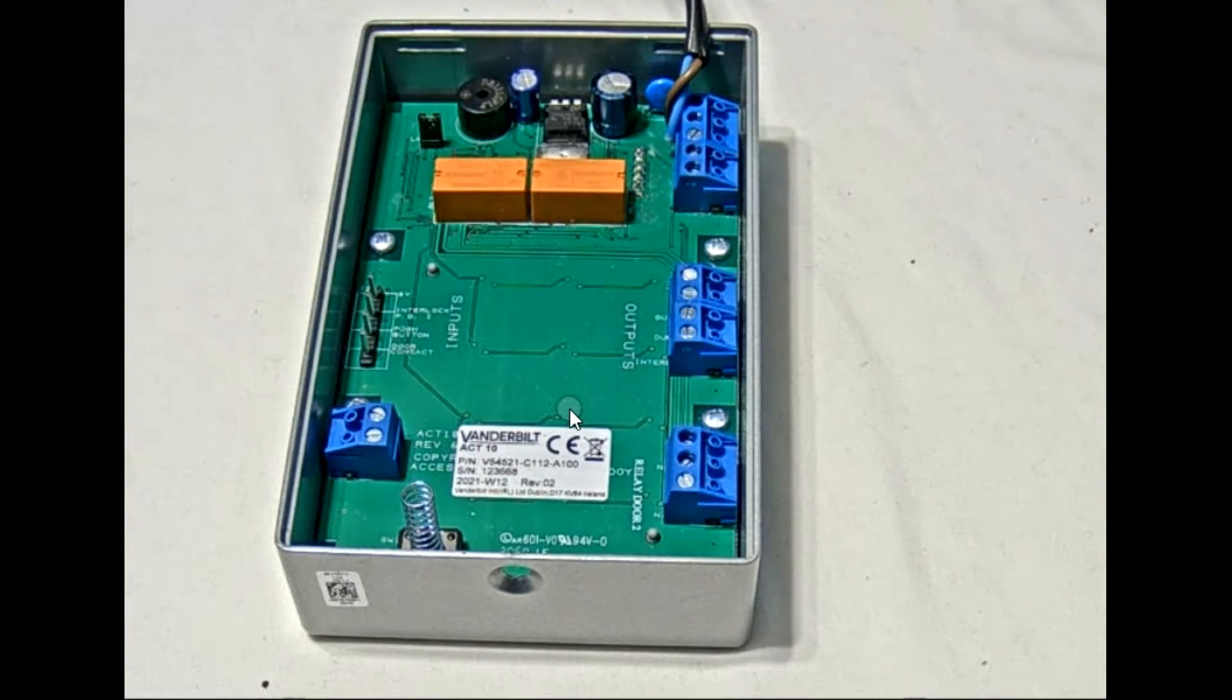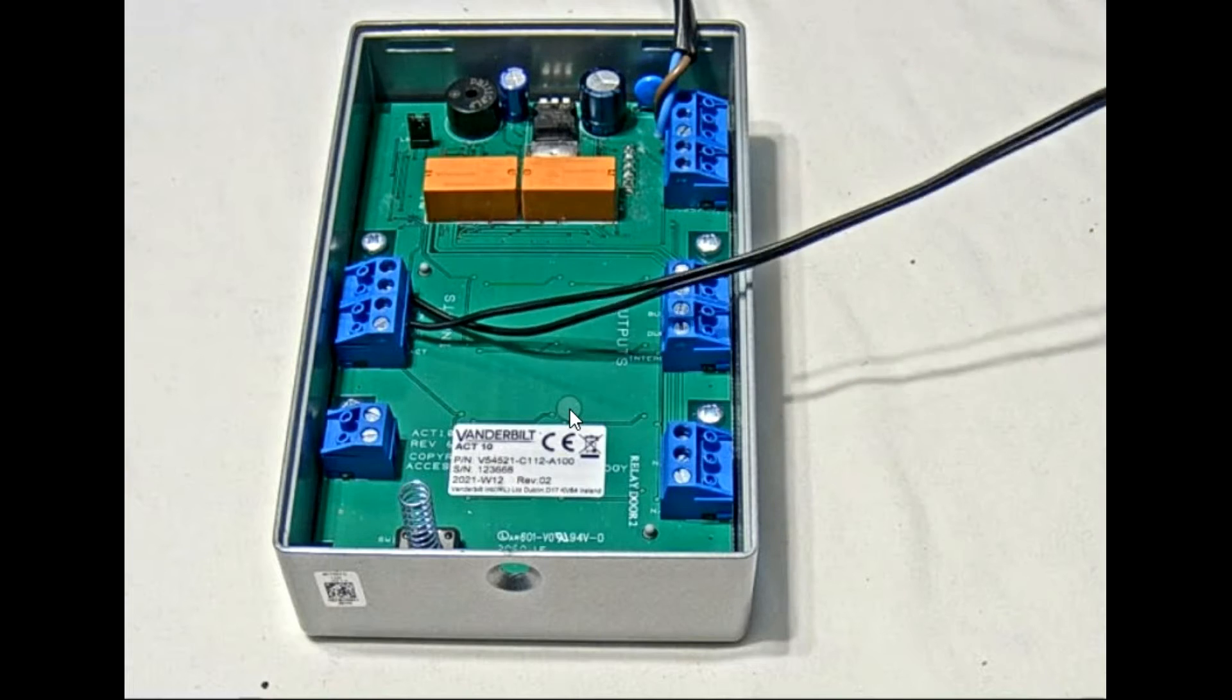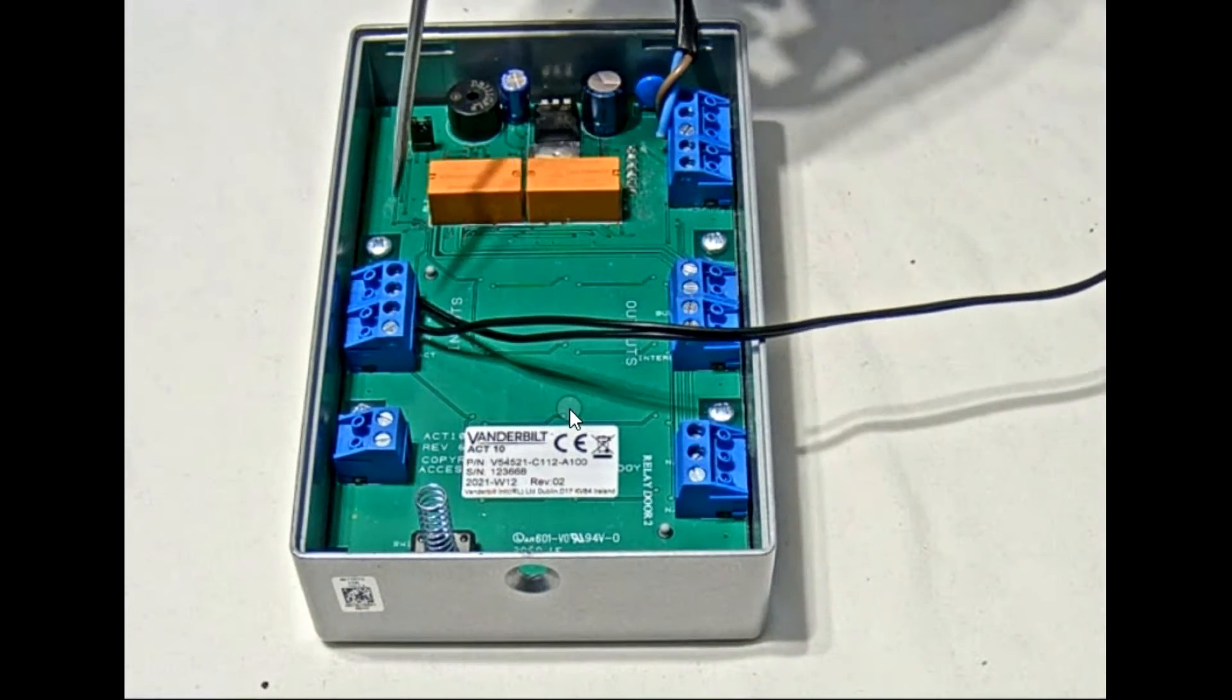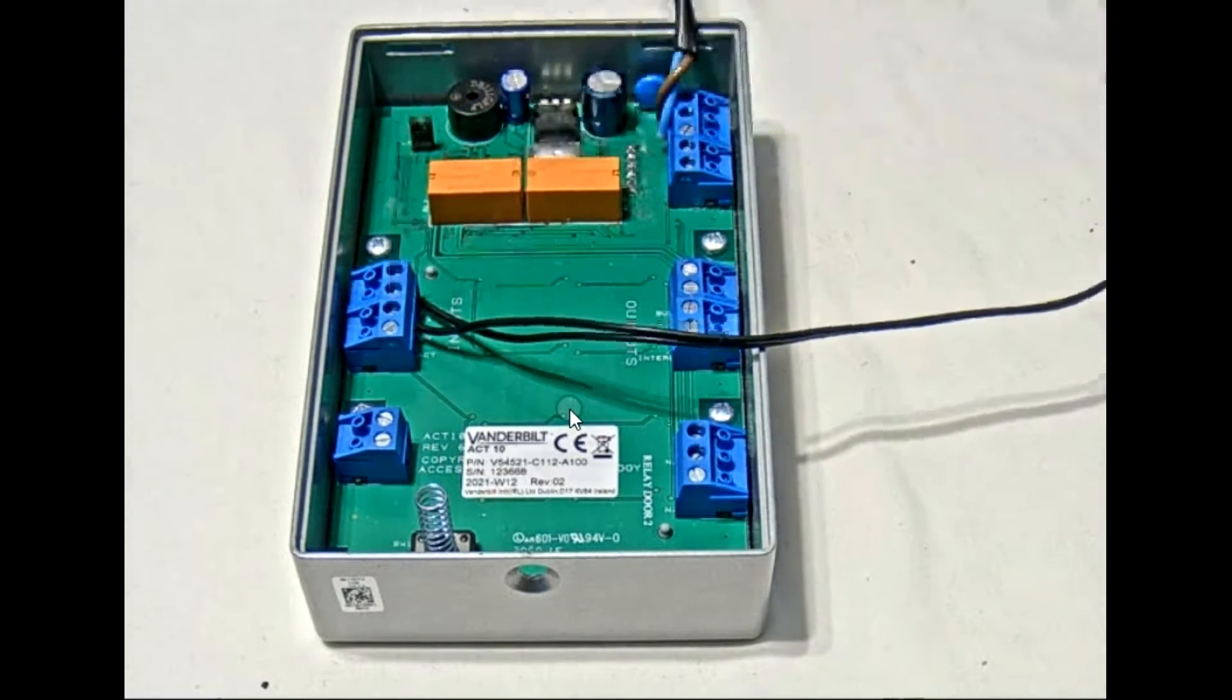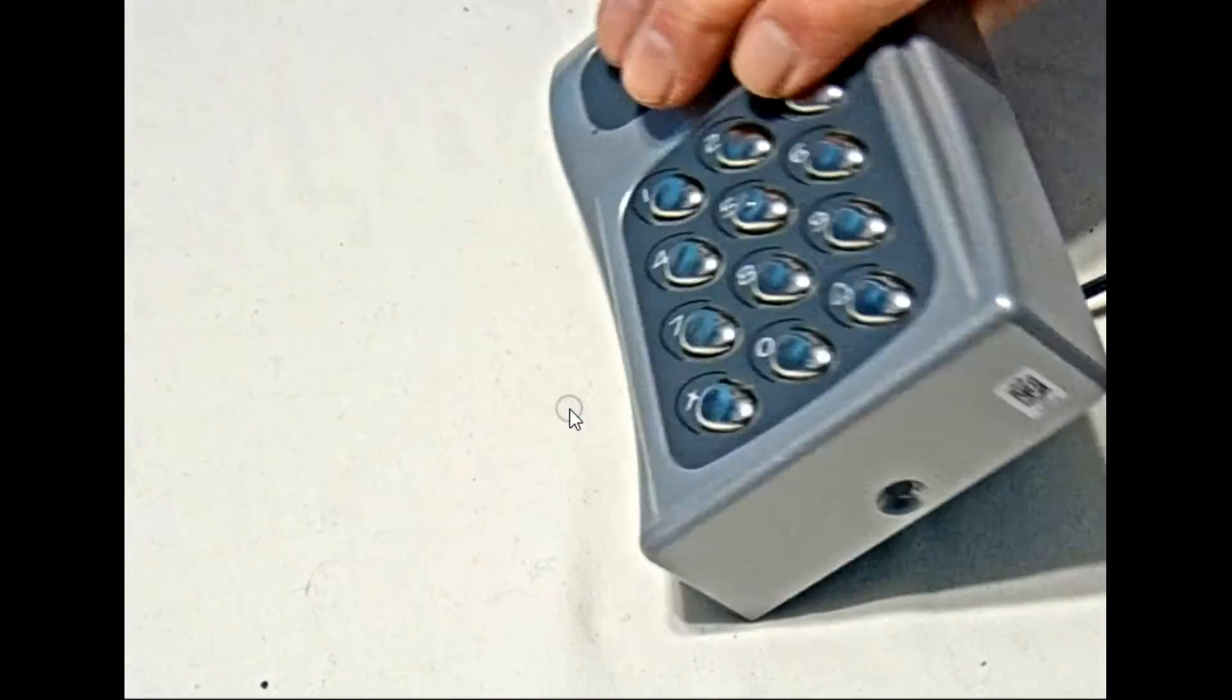I've already made the connector up, so it's nice and easy. And there we go. Two wires connected. One wire to zero, one wire to PB. Now let's turn the keypad over.